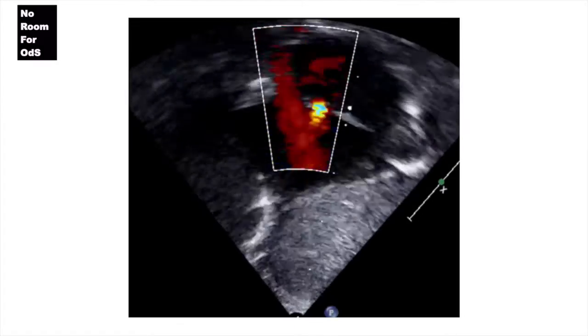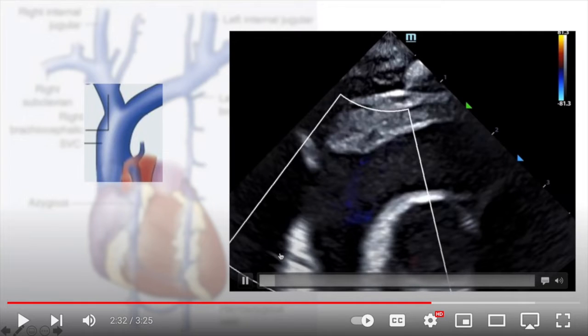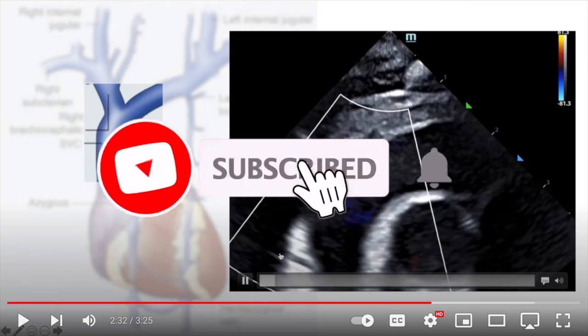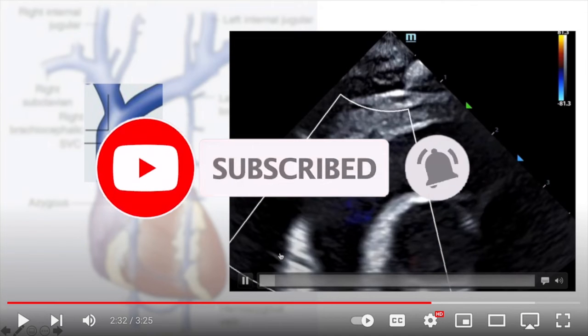We then move to the atrial septum view to assess the atrial shunt and its hemodynamic significance. SVC flow is next. Last but not least, we have to assess the central line position — feel free to watch the video I posted about how to assess the position of the line using ultrasound.